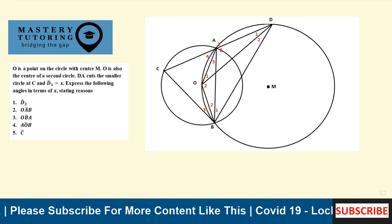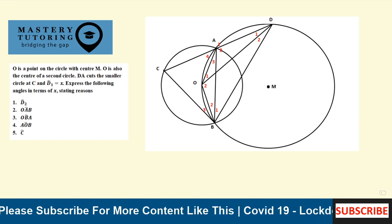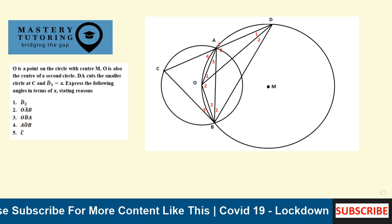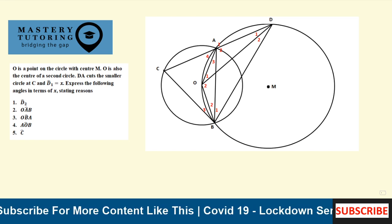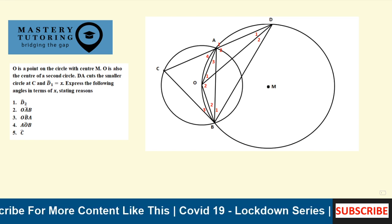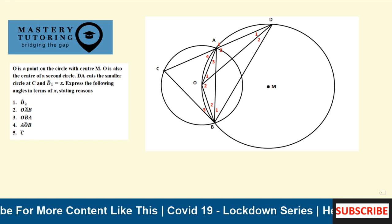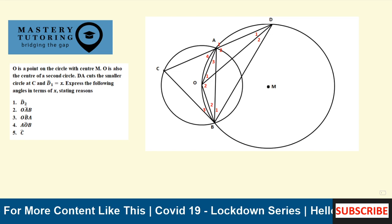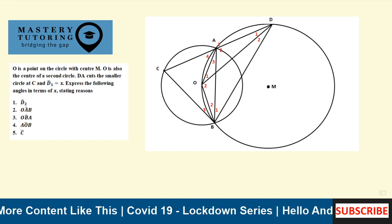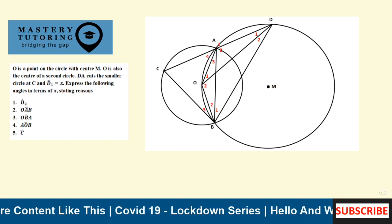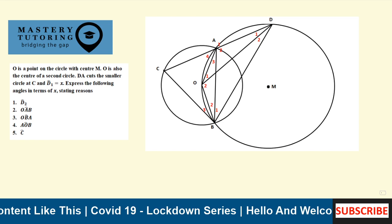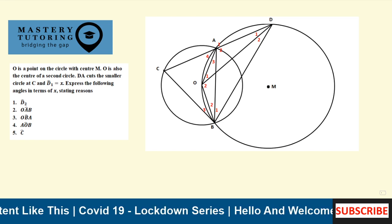It reads as follows: O is a point on the circle with center M; O is also the center of a second circle. DA cuts the smaller circle at C, and D1 is equal to X. Express the following angles in terms of X, stating the reasons. We are given two circles which intersect at points A and B. The center of the smaller circle is O while the center of the bigger circle is M. We also have other points on the circle such as C and D.